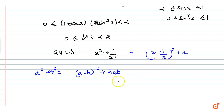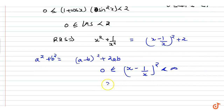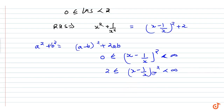So the term (x − 1/x)² ranges from 0 to infinity. Therefore, the RHS = (x − 1/x)² + 2 ranges from 2 to infinity. That means the minimum value of the RHS is 2.